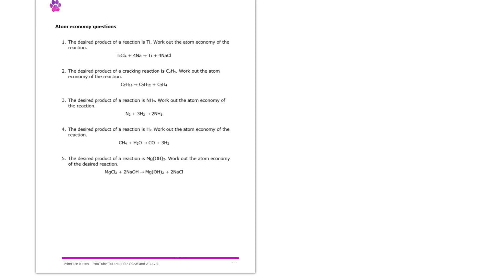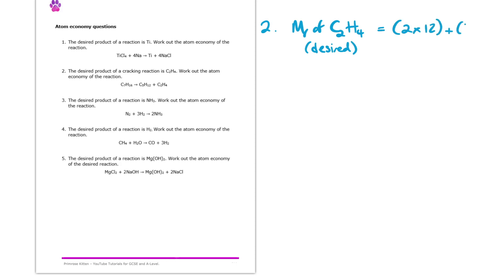Here for question two, what we have is a cracking reaction. We're cracking C7H16 into pentane and ethene. We're told that the desired product is ethene, and so we need to work out the Atom Economy of this reaction. Starting off, let's work out the MR of that desired product, the C2H4. We know that carbon has an MR of 12, so two times 12 plus four times one for the hydrogen, which ends up giving us an MR for the ethene of 28.